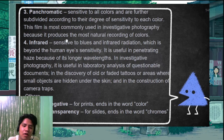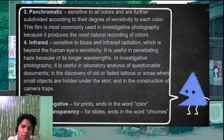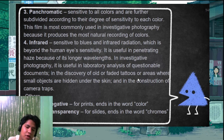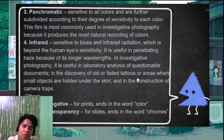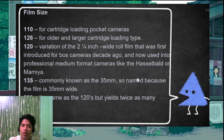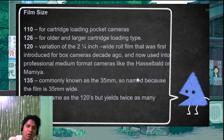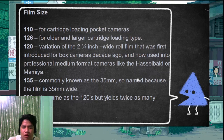Color transparency refers to the positive image directly on film. Film comes in sizes: 110, 126, 120, 135, and 220. The 135 format is 35mm film.